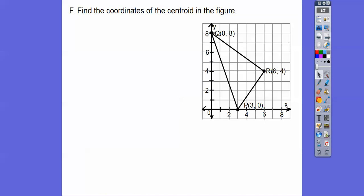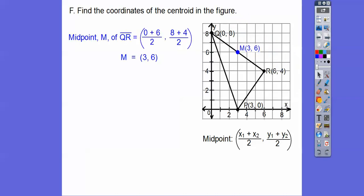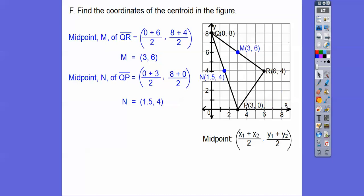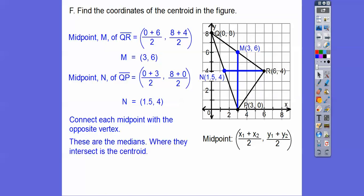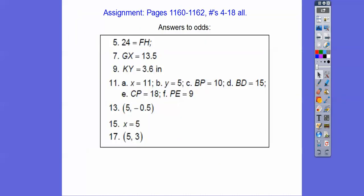Let's find the coordinates of the centroid in this figure. Remember the midpoint formula: average the x's together and average the y's together. Find the midpoint of one segment — 0 plus 6 over 2, 8 plus 4 over 2 — that gives point M at (3, 6). Do the same for another segment: 0 plus 3 over 2, 8 plus 0 over 2, giving point N. Connect each midpoint to the opposite vertex to get two medians. Where they intersect is the centroid at (3, 4). If you're in my class, that will be your assignment. Take care.